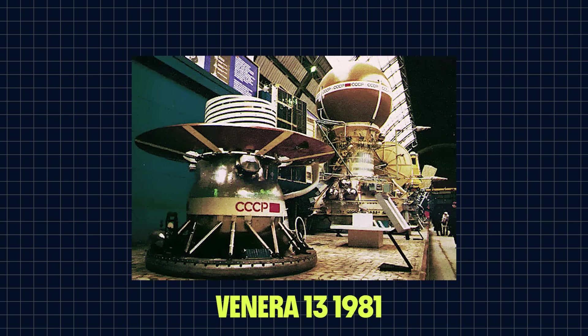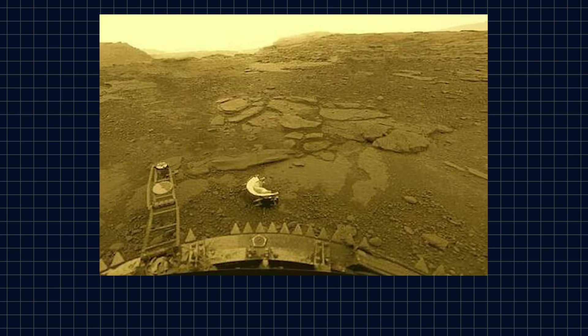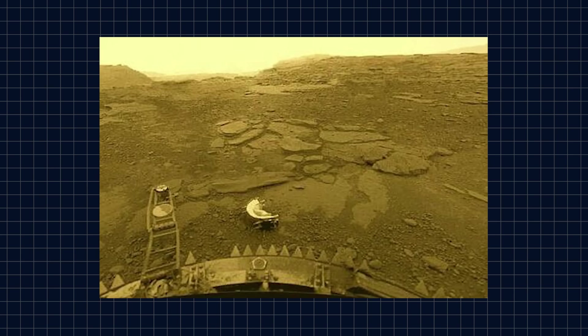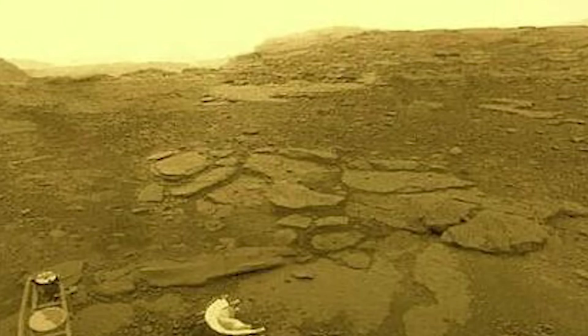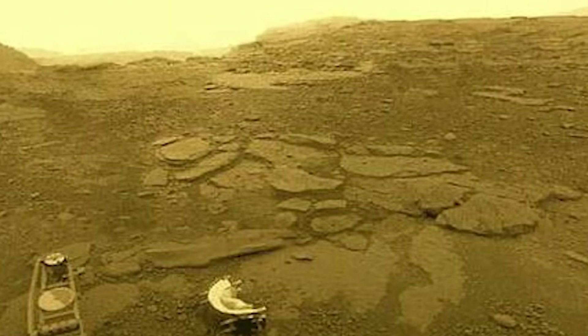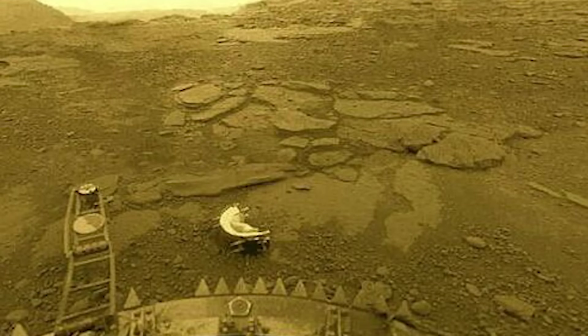But then we get to Venera 13. An unlucky number, but a highly successful mission in the year 1981. This probe returned the first ever color photo of the Venetian surface. Again, the surface around the lander is just flat, sandy rock, but you can see just a touch of landscape beyond. The probe touched down near the edge of a cliff, so you can get a sense of depth that makes it all seem a lot more real, and more alien at the same time.